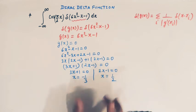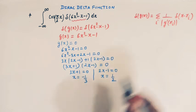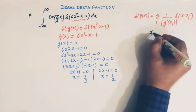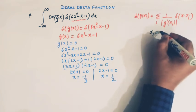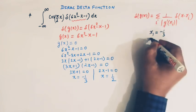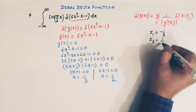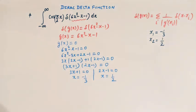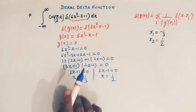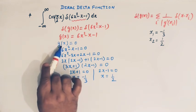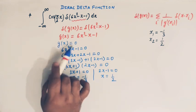We have solved this quadratic equation and obtained two zeros. Let us label them as x1 equal to minus 1 over 3 and x2 equal to 1 over 2.